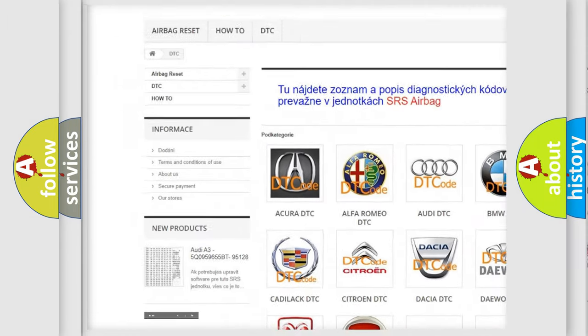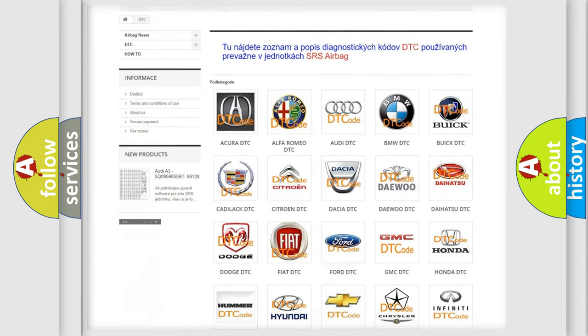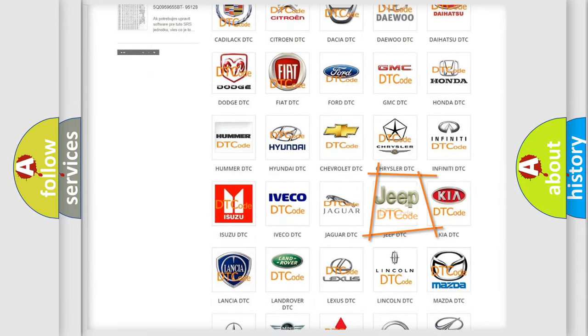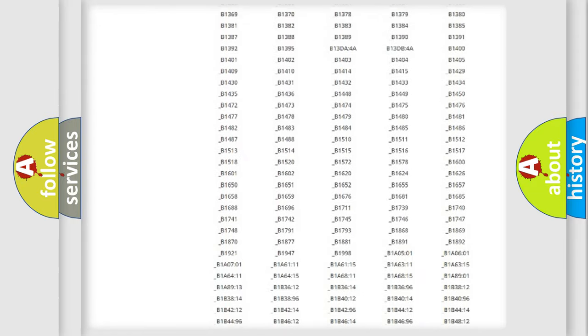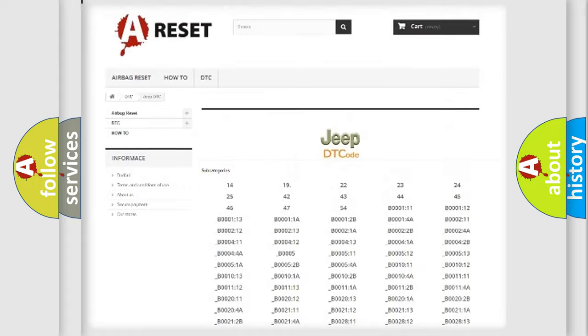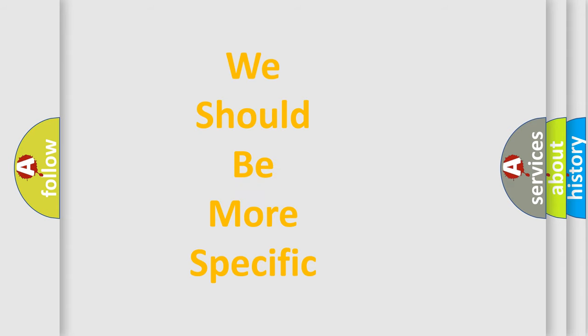Our website airbagreset.sk produces useful videos for you. You do not have to go through the OBD2 protocol anymore to know how to troubleshoot any car breakdown. You will find all the diagnostic codes that can be diagnosed in Jeep vehicles. Also many other useful things. The following demonstration will help you look into the world of software for car control units.